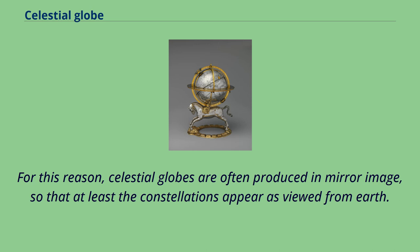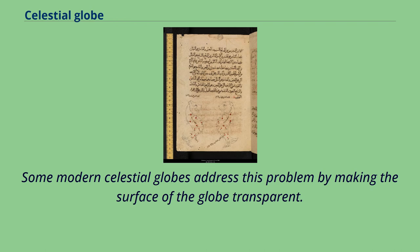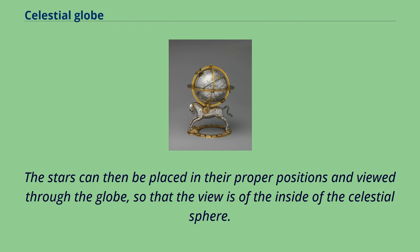For this reason, celestial globes are often produced in mirror image, so that at least the constellations appear as viewed from Earth. Some modern celestial globes address this problem by making the surface of the globe transparent. The stars can then be placed in their proper positions and viewed through the globe, so that the view is of the inside of the celestial sphere.